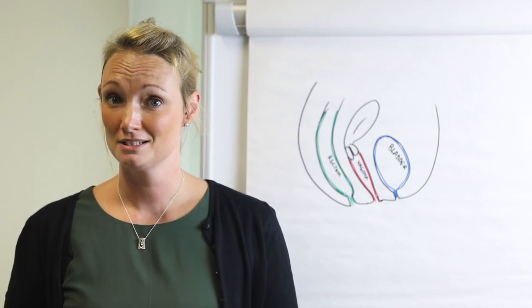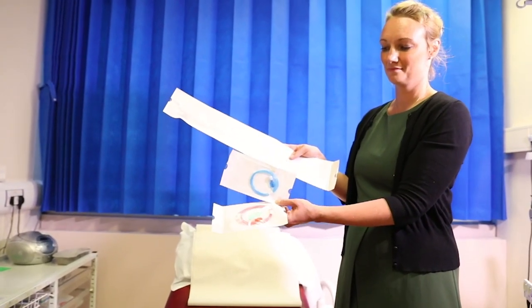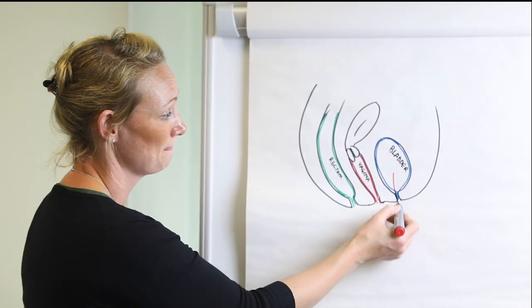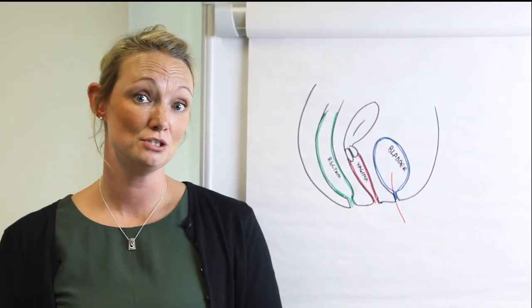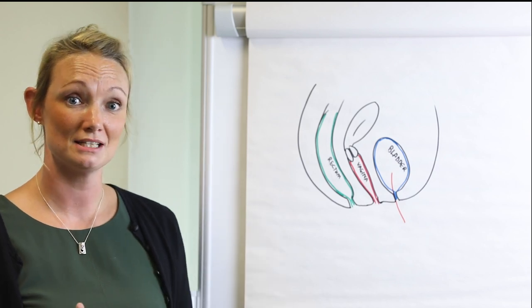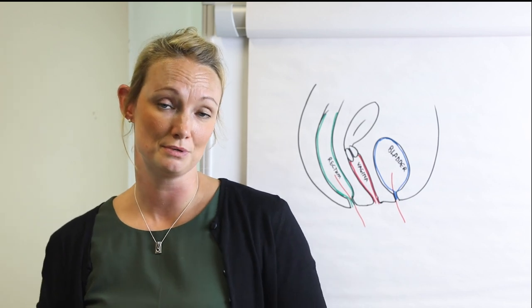The second part is filling cystometry, which assesses the storage capabilities of the bladder. A filling catheter and a pressure sensor are inserted into the bladder. Post-void residual is measured and then this catheter is used to fill the bladder. A pressure sensor is also inserted into the rectum or the vagina and this measures the intra-abdominal pressure.